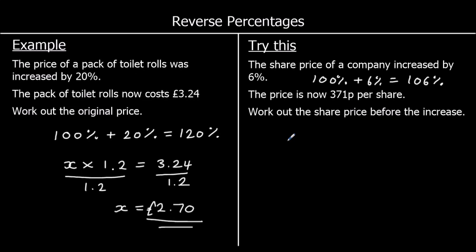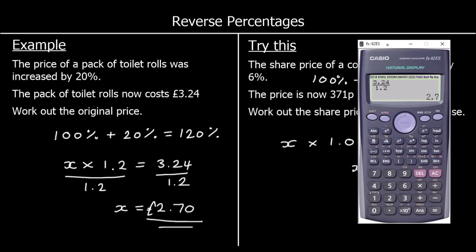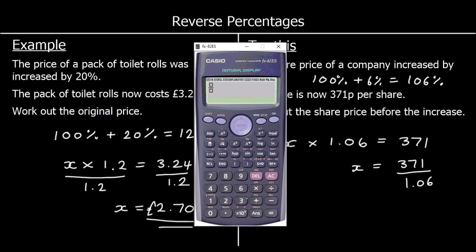So the original, we're going to call x, times 106%, or as a decimal, 1.06 equals 371. So if I want to get x by itself, the original by itself, I divide both sides by 1.06. So I can type into the calculator, 371 divided by 1.06. And that gets me 350.